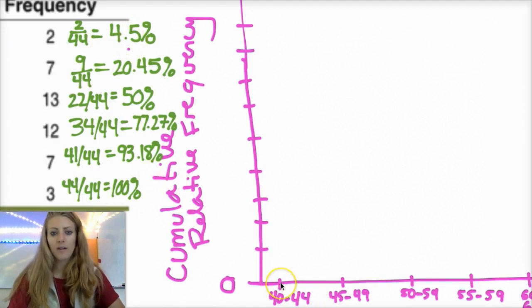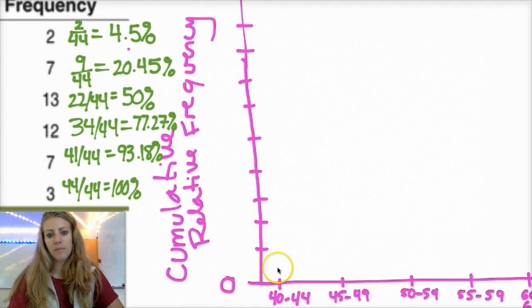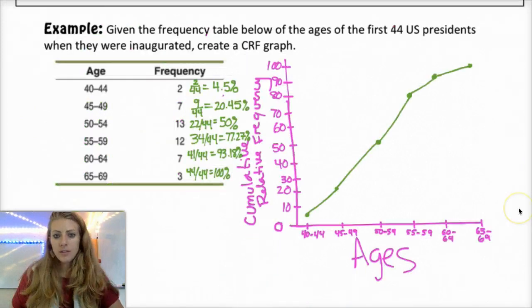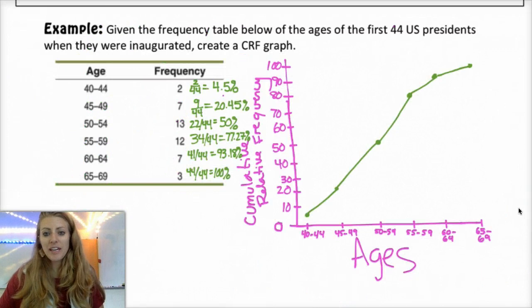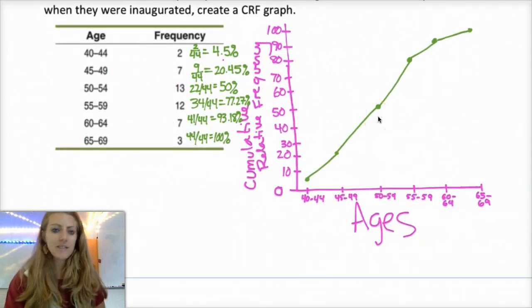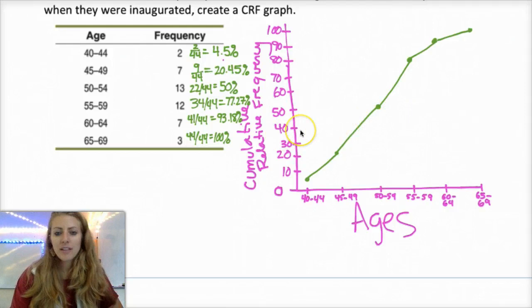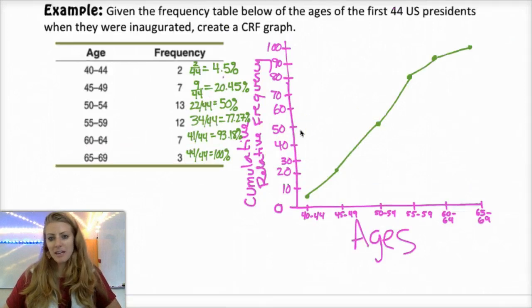And so then the idea is you just make a line graph of plotting these percentages. So I'm going to do 40, 44, and about 4.5%. So these are going up by 10%, so it'll be about here. So that's about what it should look like.